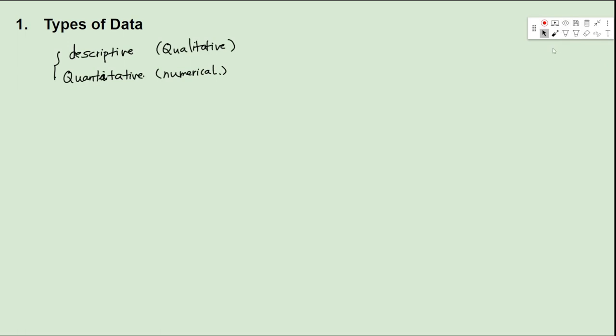First we take a look at the types of data. Usually there are two types of data. The first one is descriptive, the second one is numerical. For the descriptive, we can also call it qualitative, and the other one we call it quantitative.